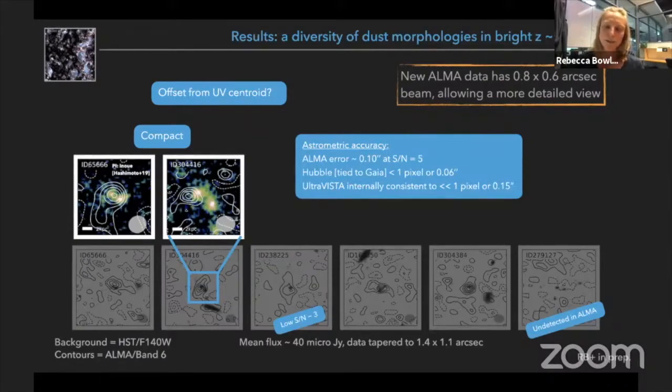So I've done a lot of checks. All of the imaging probing the UV emission is matched to Gaia to very high accuracy. And the ALMA data, the real limitation here is the fact that these detections are only around signal to noise five.